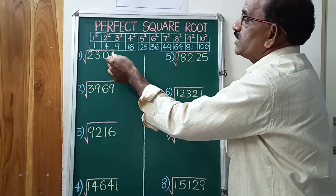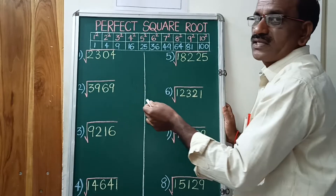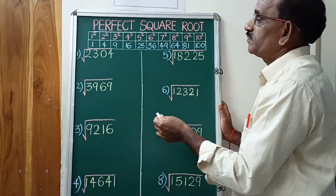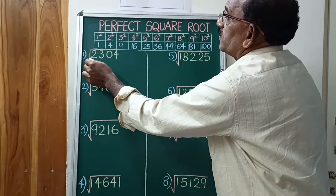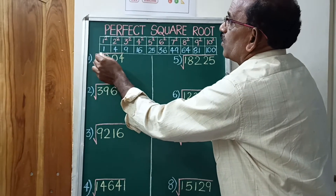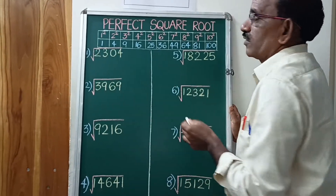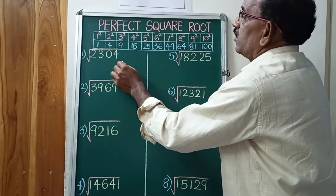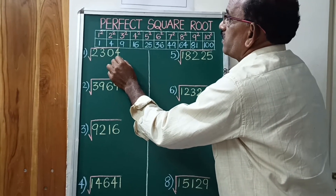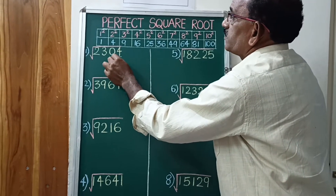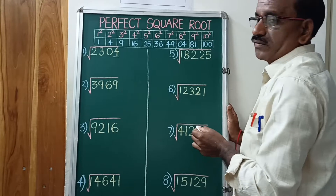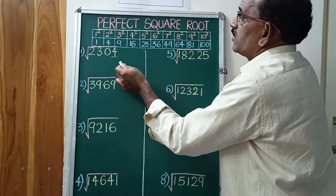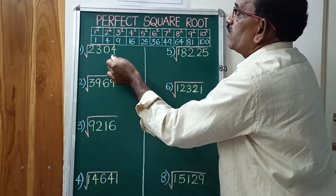For big numbers, here is an easy method. Take the square root of 2304. The last digit is 4, so look at the square root unit place.